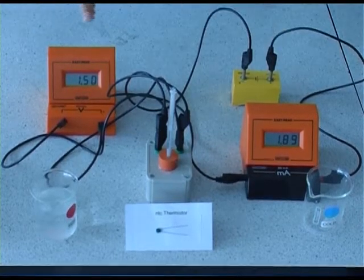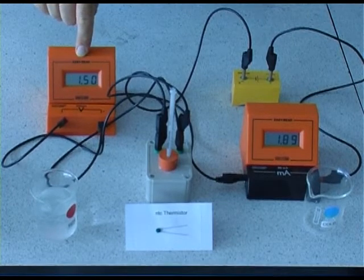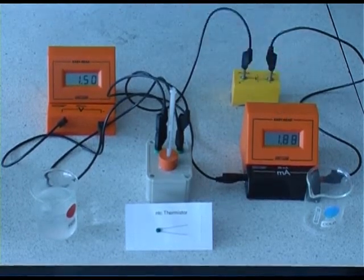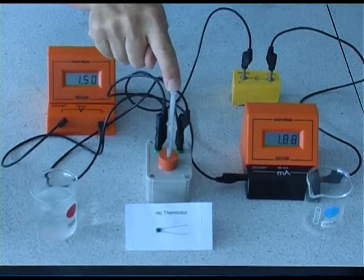So we can now calculate the resistance knowing the voltage from the voltmeter, the current from the milliammeter and we can then plot resistance against temperature.